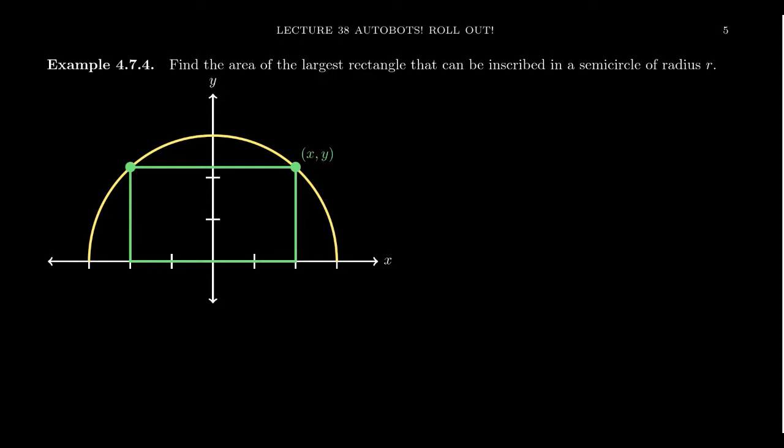And let's inscribe a rectangle. So what we might inscribe is that the two vertices on the top right here and here are going to live on the side of this semicircle.